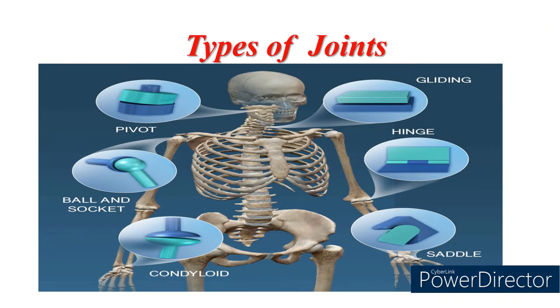Types of joints: a joint is a place where two bones meet.